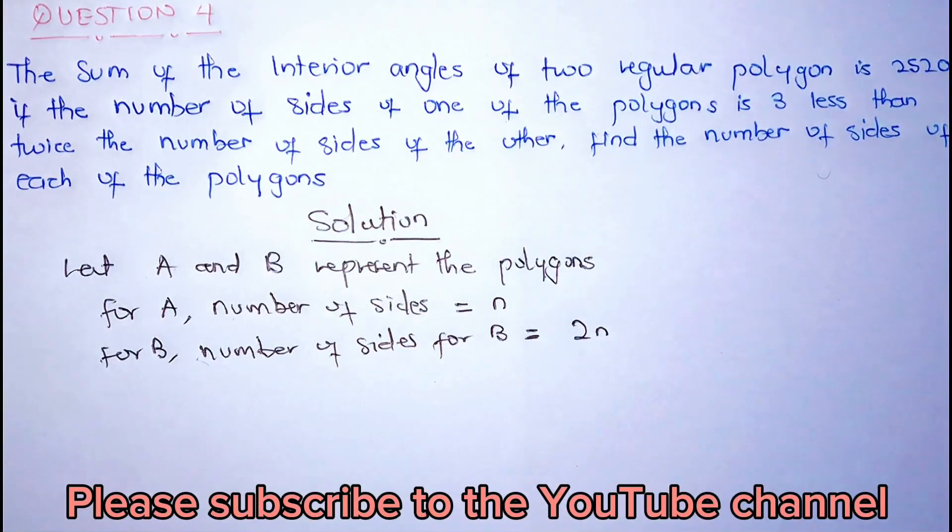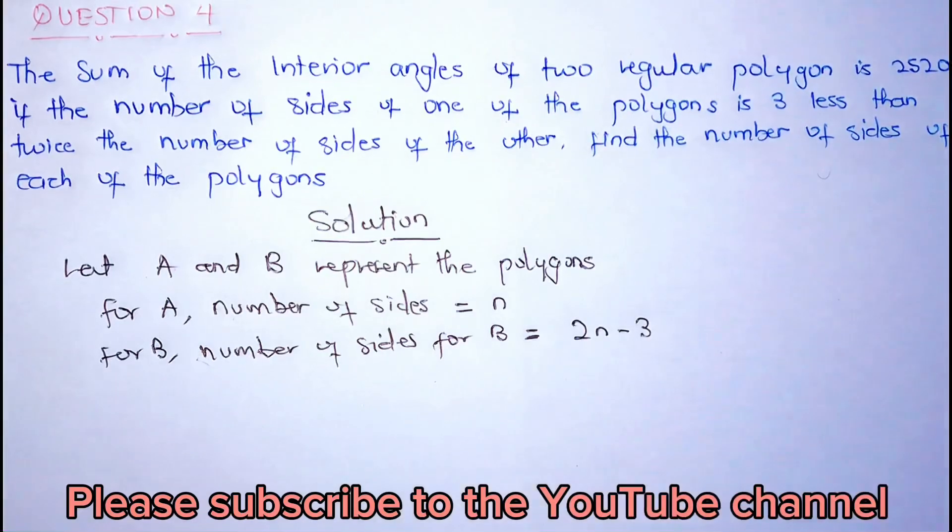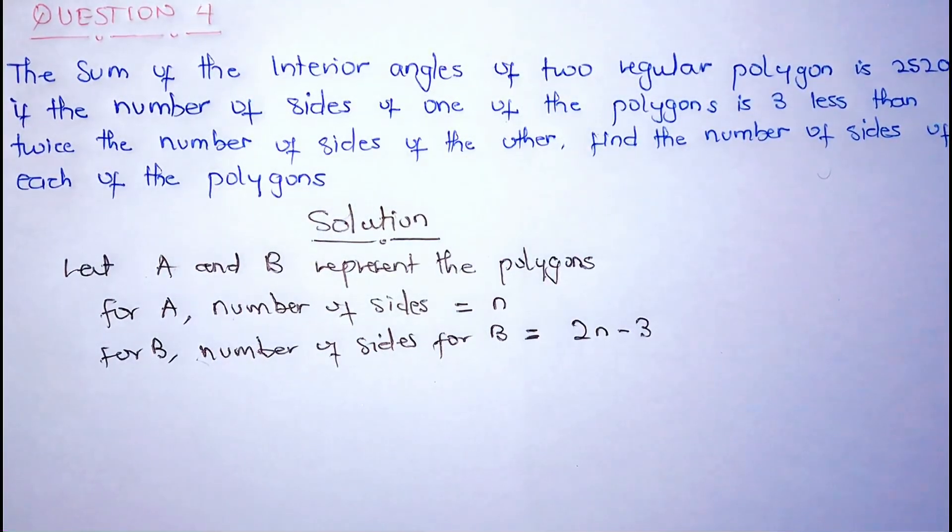And 3 less than the twice is 2N minus 3. So the number of sides for the first one is N and the number of sides for the second one is 2N minus 3.